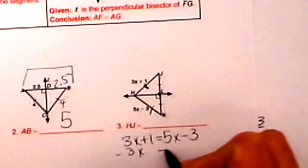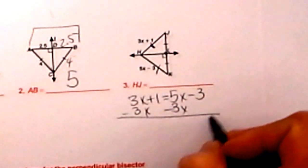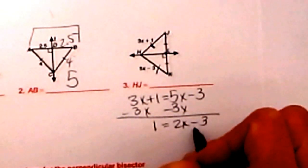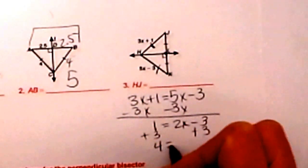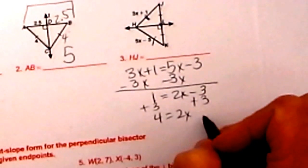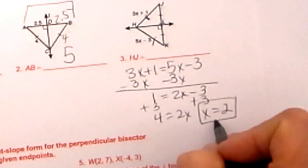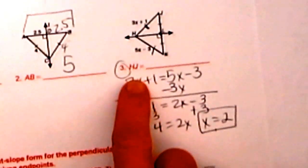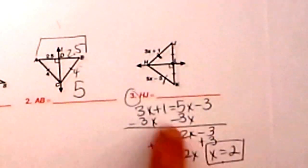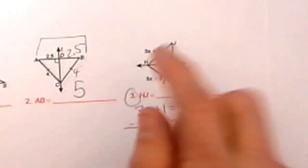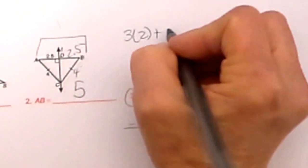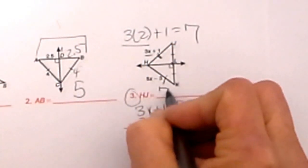So let's subtract 3x from both sides, and that gives us 1 is equal to 2x minus 3. Then let's add 3 to both sides, so 4 is equal to 2x, which means x is equal to 2. But we're not done, because they're not asking us to find the value of x — they want us to find the length of HJ. So we take x equals 2 and plug it into our expression: 3 times 2 plus 1, that's 6 plus 1, so HJ is 7.